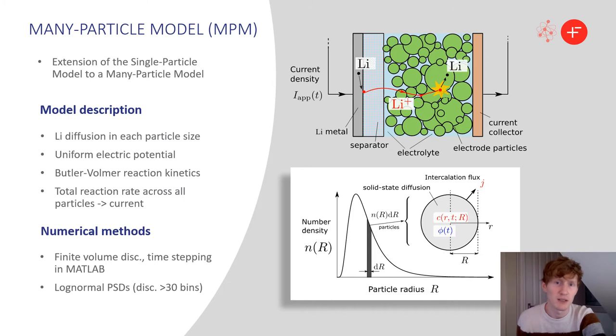So, given a PSD, which is prescribed, the model consists in words of spherical diffusion of lithium for each particle size, and a uniform electric potential across them all. We assume we've got Butler-Volmer kinetics, and the total reaction rate across all the particles, summed up, produces the circuit current.